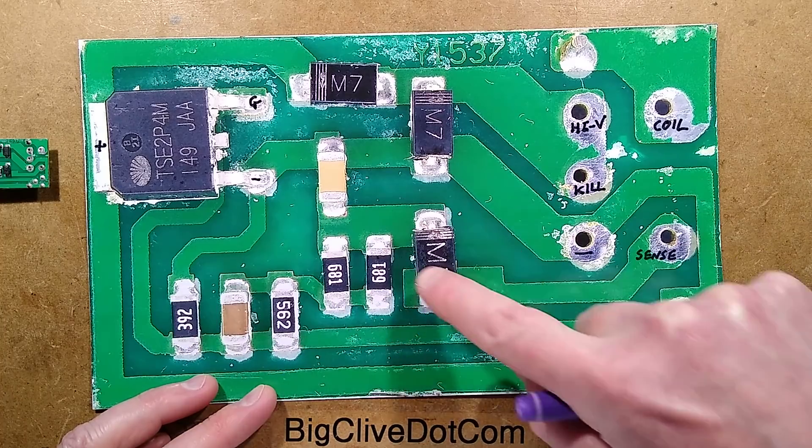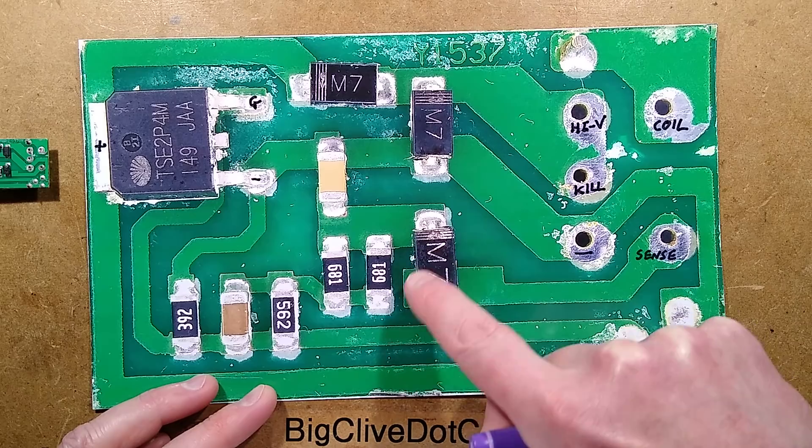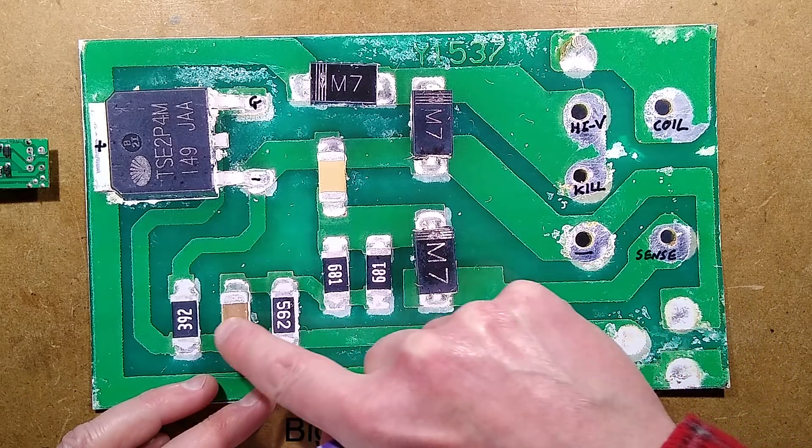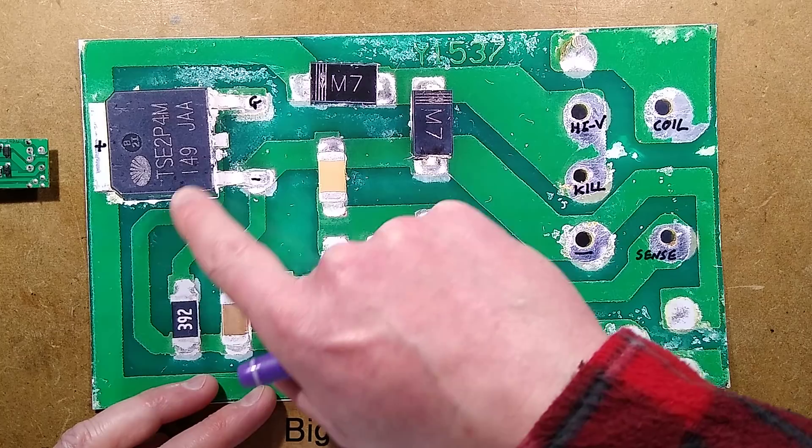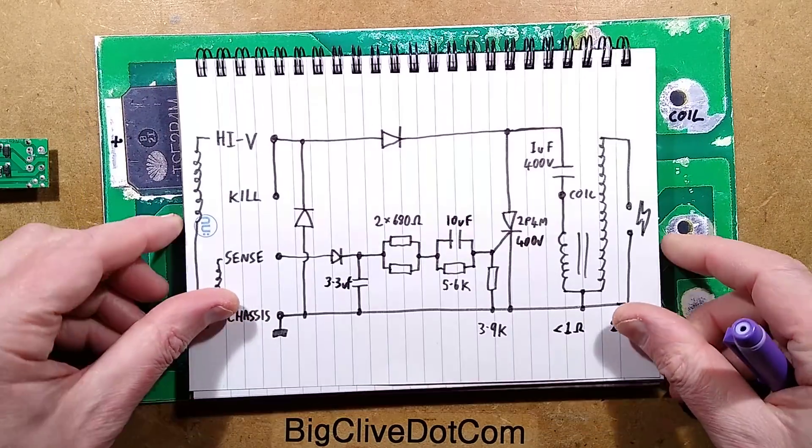We've got the sense input. Most of the circuitry here is for the sense input that's used to trigger the thyristor. It's basically a diode and then an array of resistors and capacitors for filtering, and then it goes over to trigger the gate of the thyristor to turn it on. Let me show you the schematic.